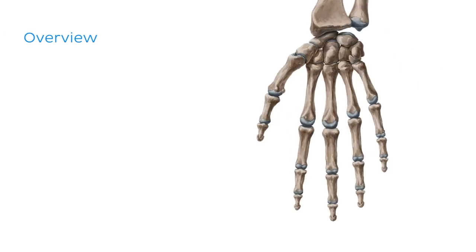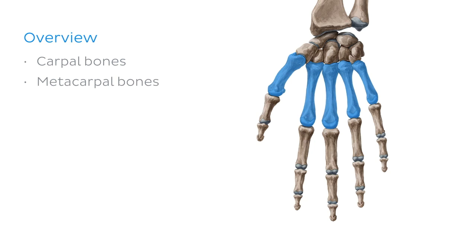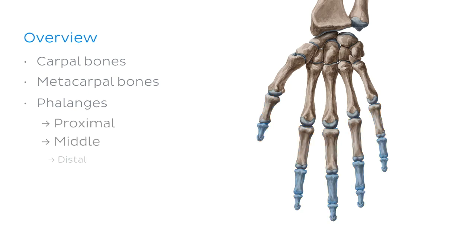Our first stop on our journey through the 27 bones of the hand will be this proximal cluster of eight small bones called the carpal bones, also sometimes referred to as the wrist bones. Next, we'll move a little more distally and explore the five metacarpal bones, which help form the bulk of the structure of the palm of your hand. This will then take us to our last stop, the 14 phalanges, which form the fingers. To make learning these bones a little easier, we'll divide them up into proximal, middle and distal groups.